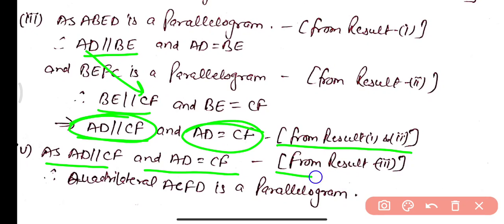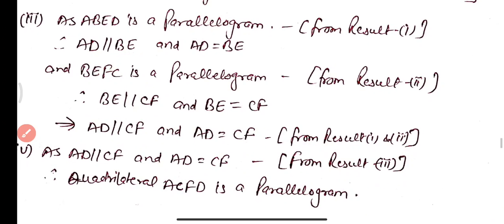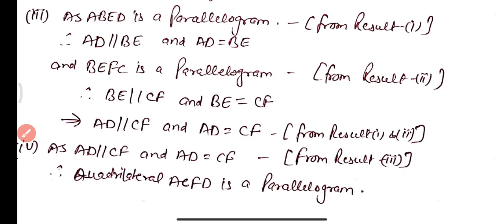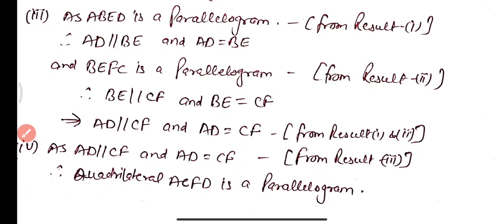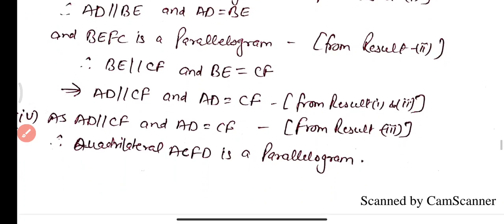Part 5: In quadrilateral ACFD, one pair of opposite sides AD is parallel to CF and AD equals CF. Therefore ACFD is a parallelogram.